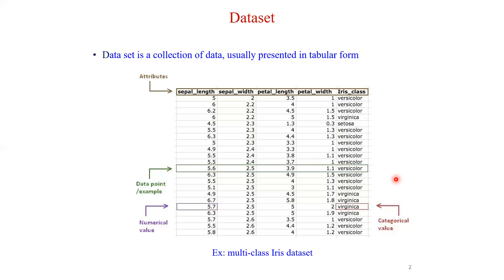Coming to the terms associated with classification: multi-class classification and binary classification. In the iris example, how many classes do we have? Only three categories — versicolor, setosa, and virginica. That means more than two categories exist. If there are more than two classes, the classification performed is called multi-class classification.